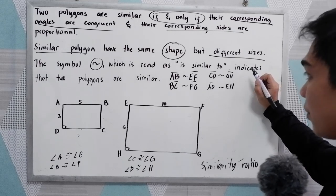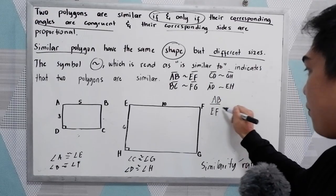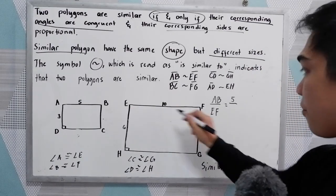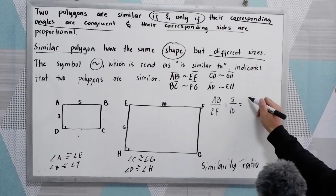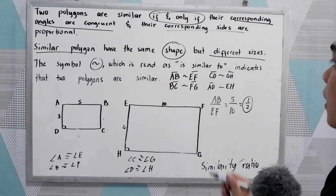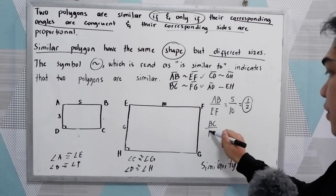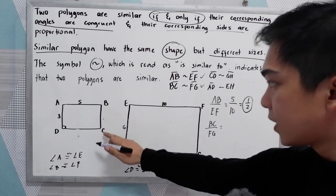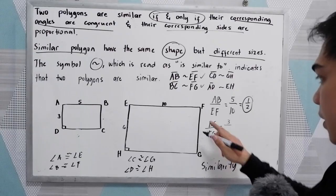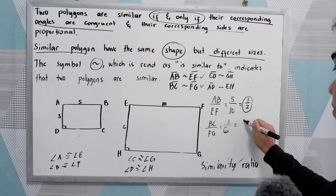Now let's get their ratios. AB over EF: AB measures 5, EF measures 10, reduced to lowest terms that is 1/2. Next, BC over FG: BC measures 3 — because opposite sides of a rectangle are congruent — over FG which is 6, also reduced to 1/2.